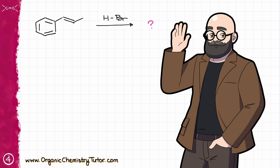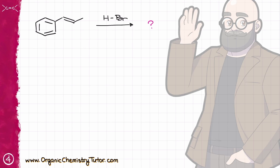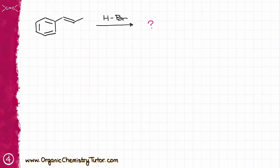Hello everyone, Victor is here, your organic chemistry tutor, and in this video I want to talk about this reaction. This is a typical hydrohalogenation of an alkene, where I have an alkene on the left side and I'm trying to react it with a hydrogen halide — HBr in this particular case.